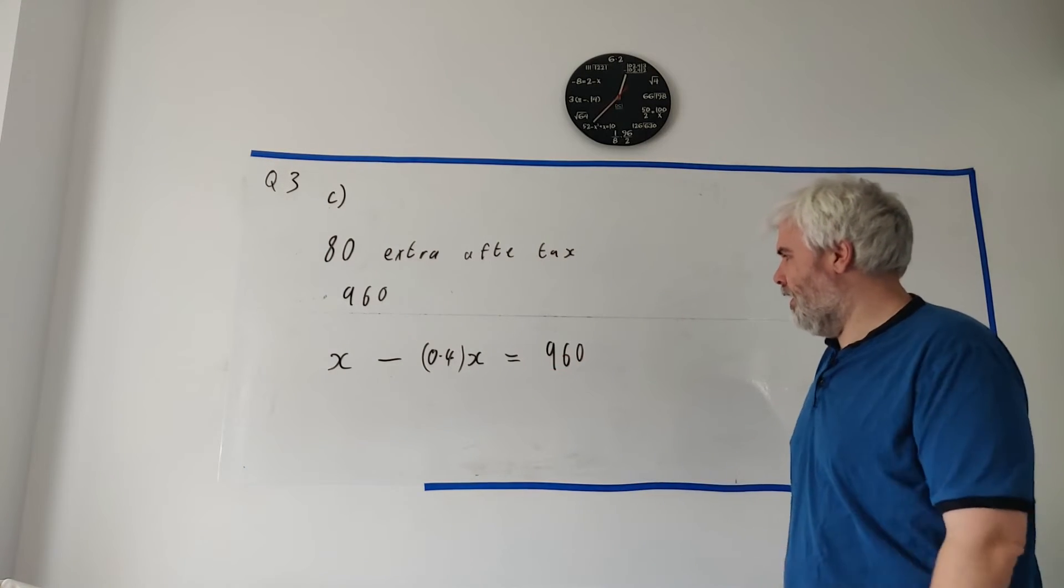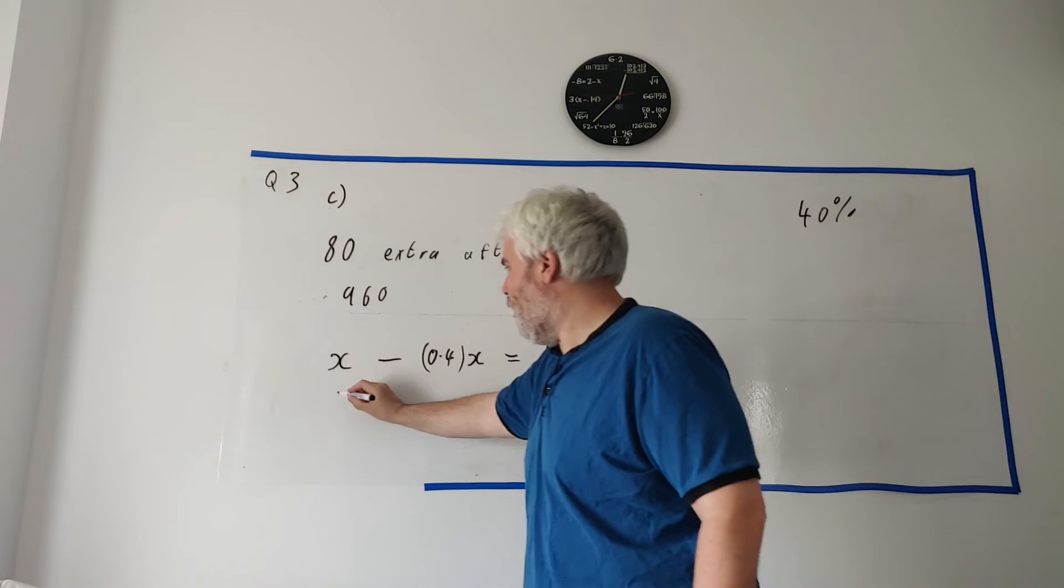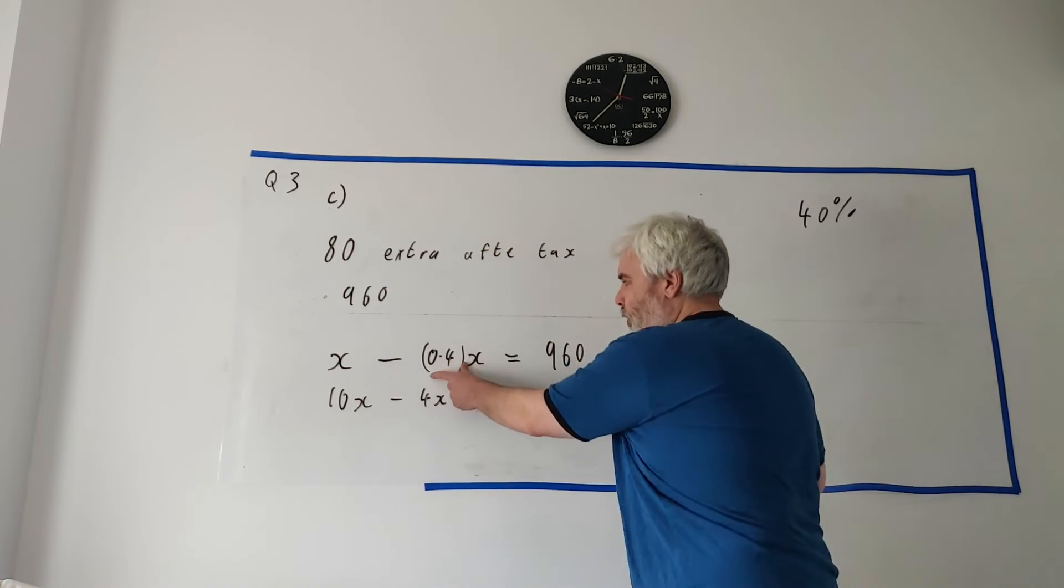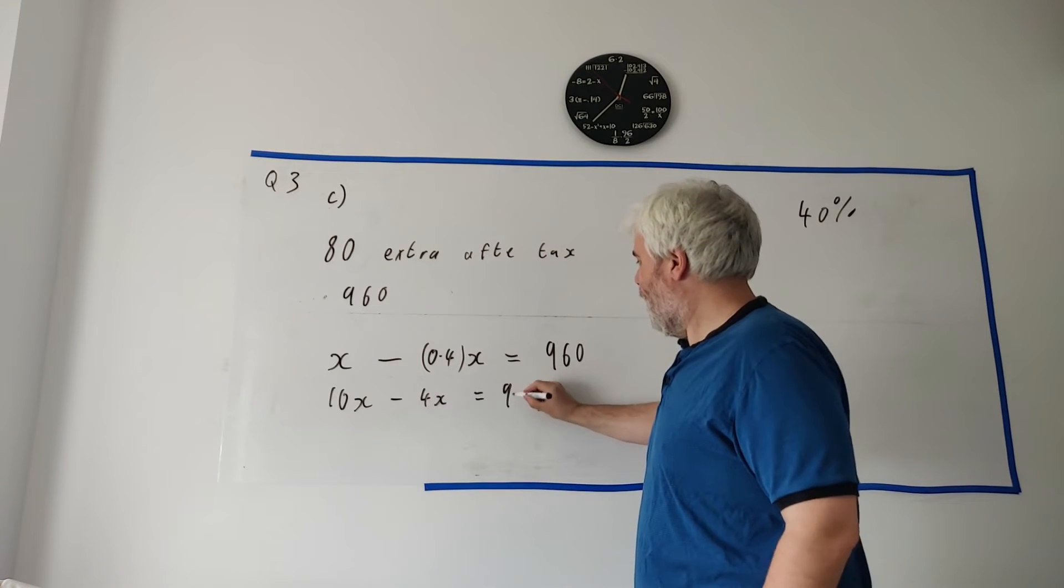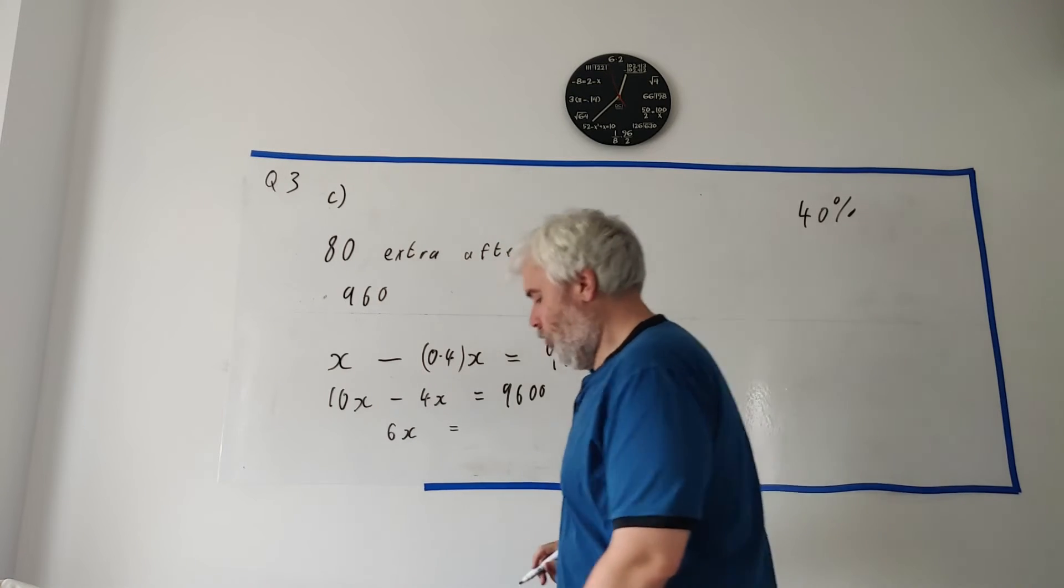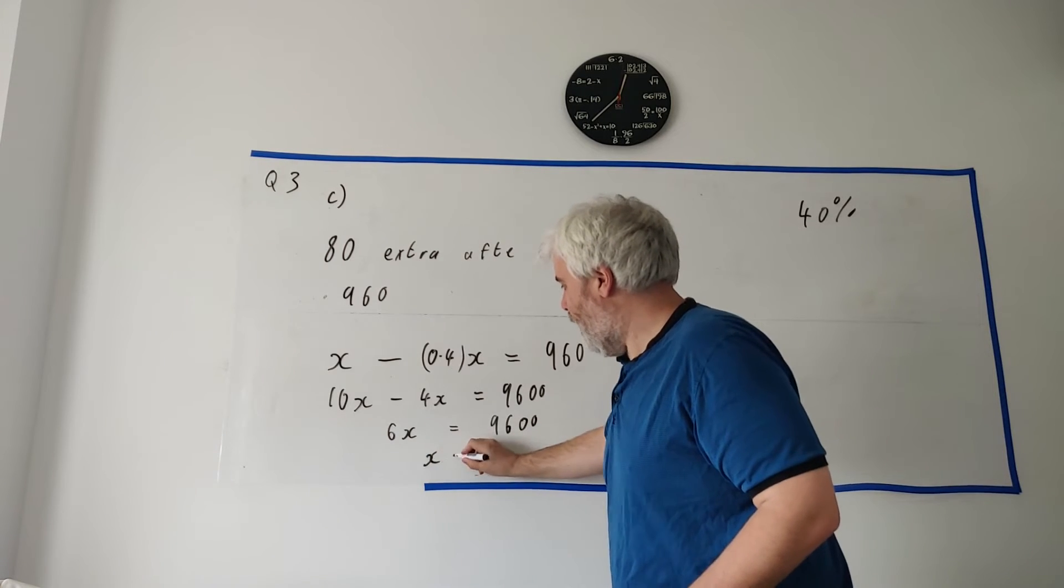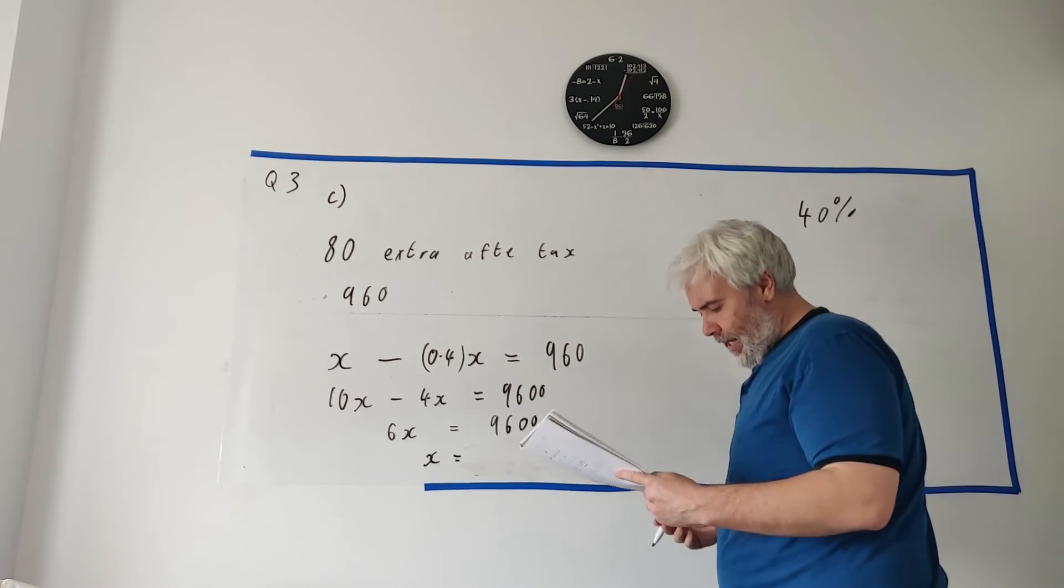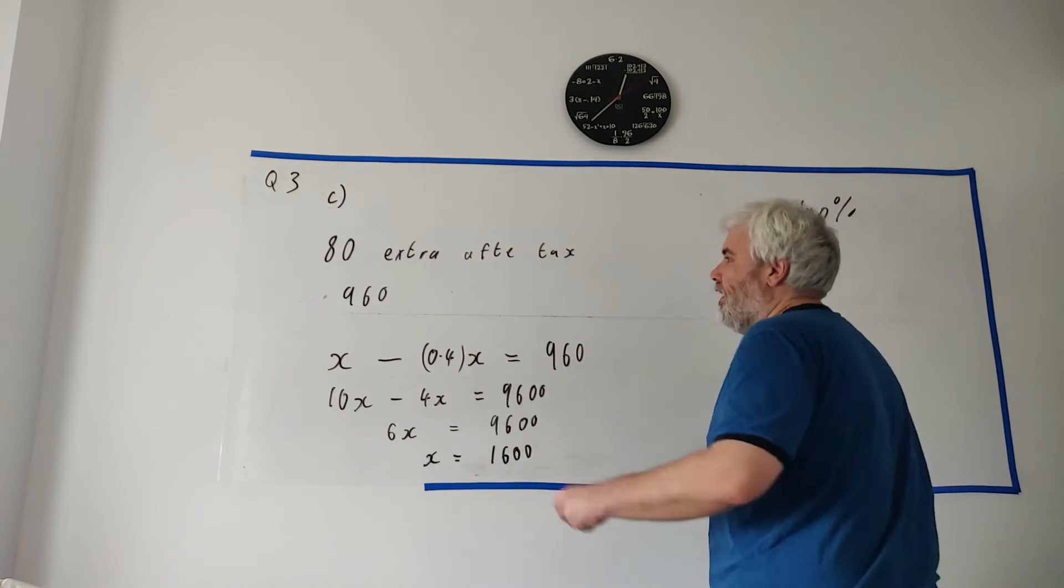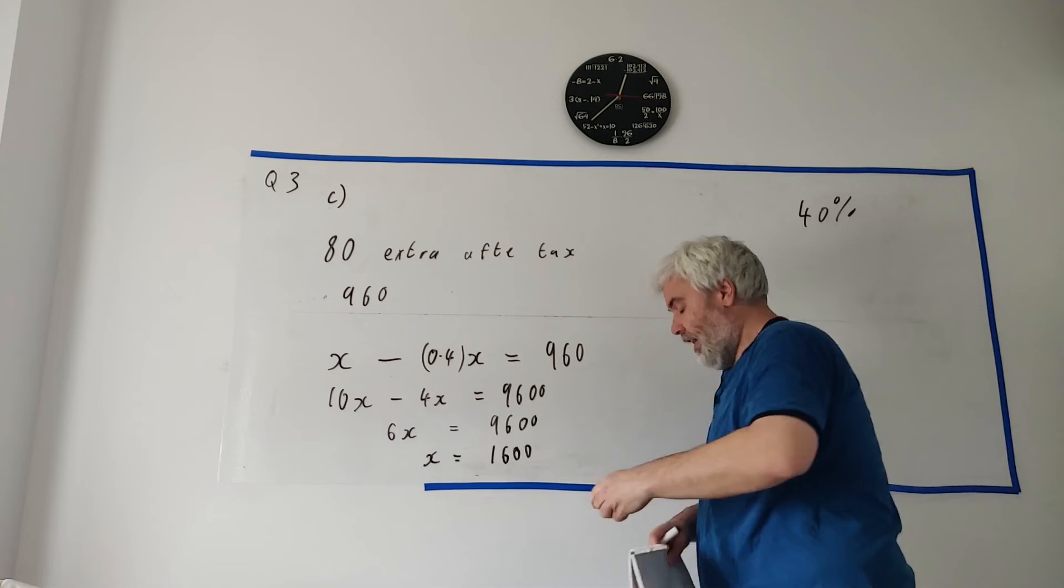We'll go ahead and solve this. I'll do it quickly because I'll show you another way. Multiply everything by 10 to make this look nicer. 10x minus 4x. So multiply that by 10, we get 4x, is equal to 9600. That's 6x here is equal to 9600. Divide both sides by 6, and we get 1600. So if she wants to take home 960 extra, she needs to ask for a pay rise of 1600.